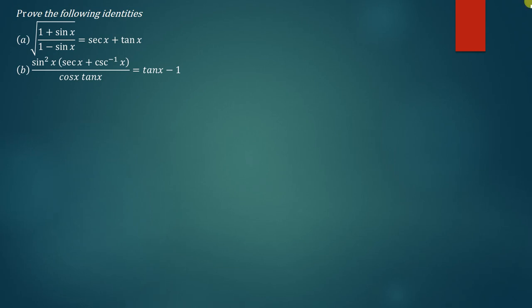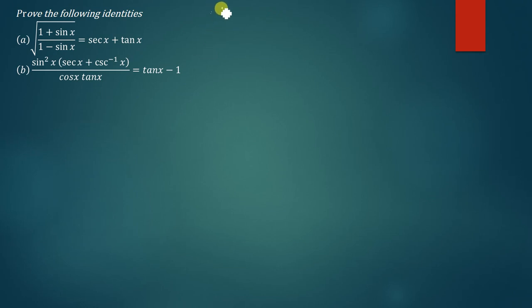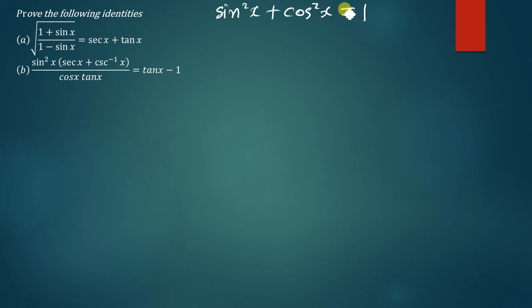The most important one is the Pythagorean identity. The Pythagorean identity states that sin²x plus cos²x is identically equal to 1. We can manipulate this trigonometric identity to form other identities.